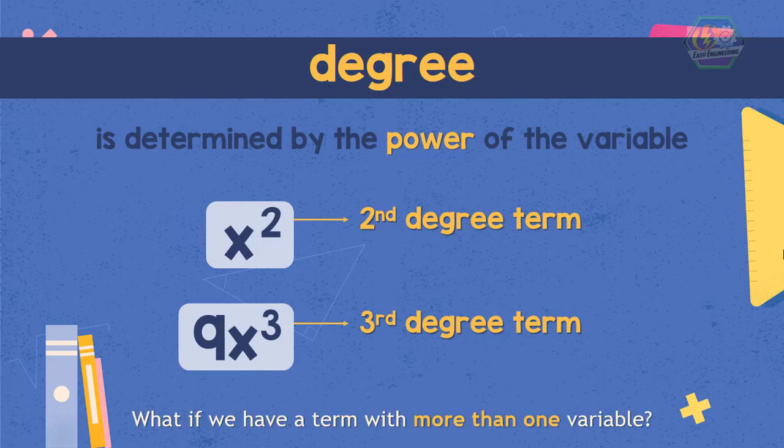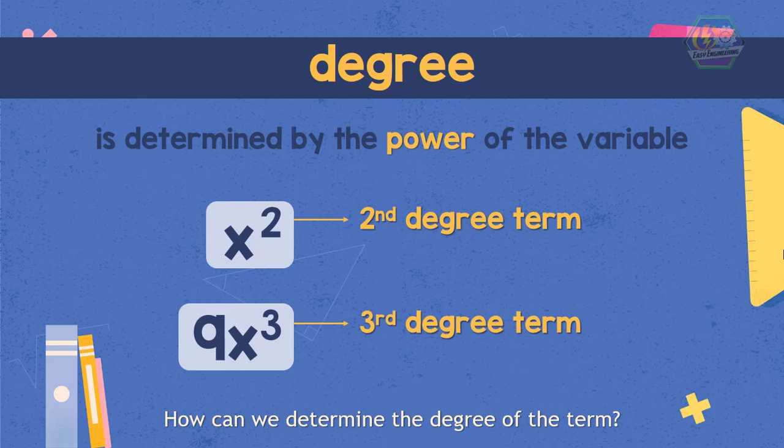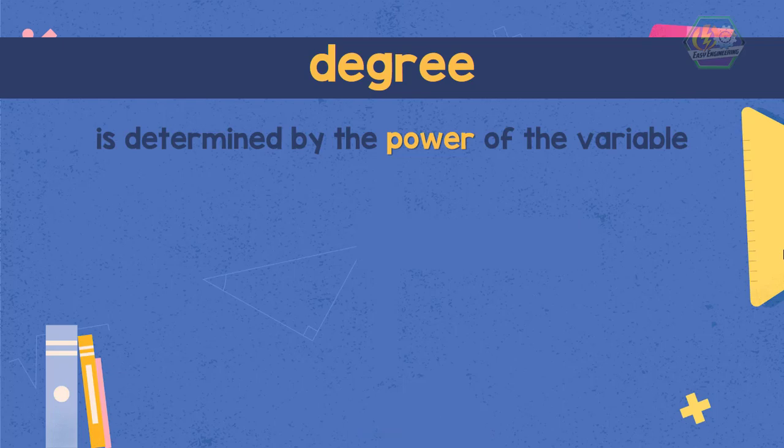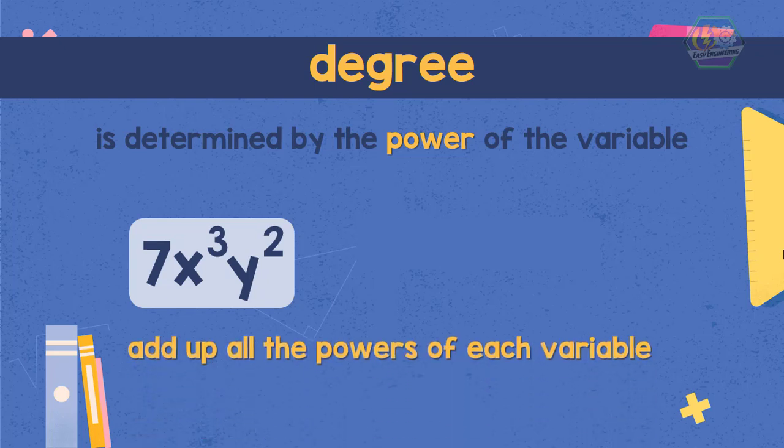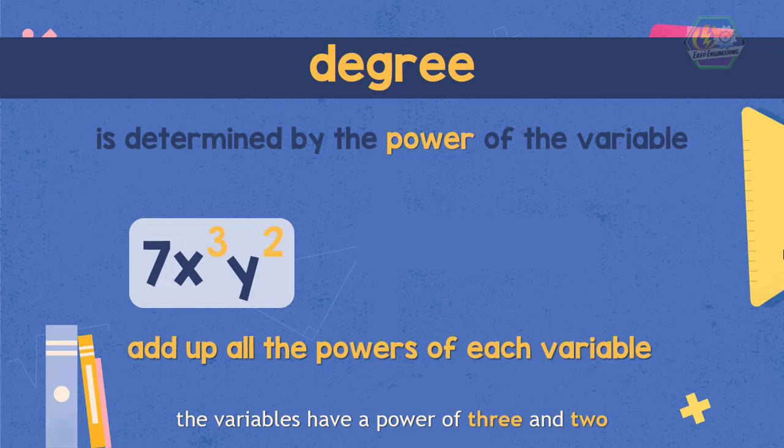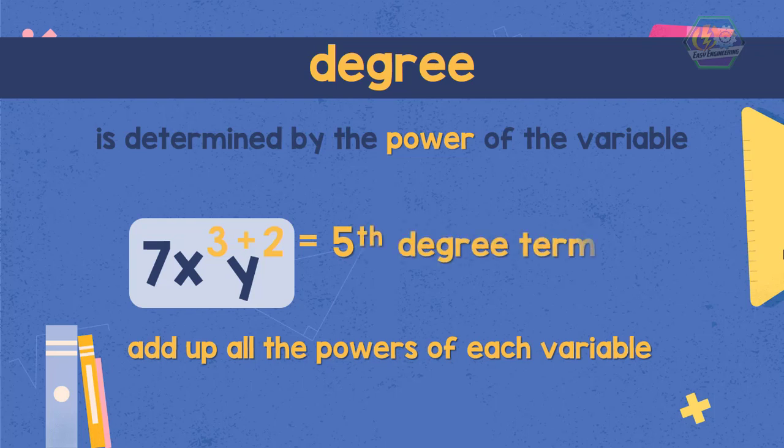What if we have a term with more than one variable? How can we determine the degree of the term? Good question, right? Now, if we have a term like this, all we have to do is add up all the powers of each variable to get the degree of that term. In this case, the variables has a power of 3 and 2. Therefore, it has a degree of 3 plus 2 which is 5, or 5th degree term.